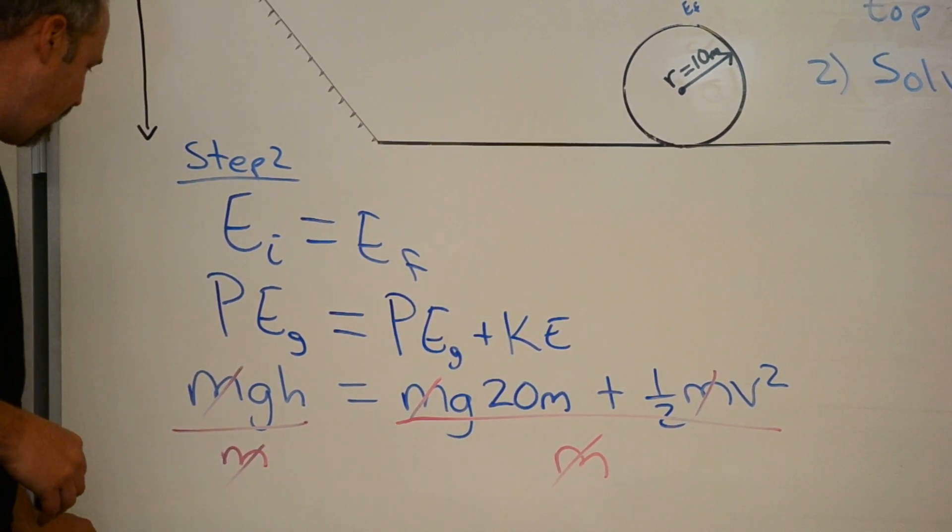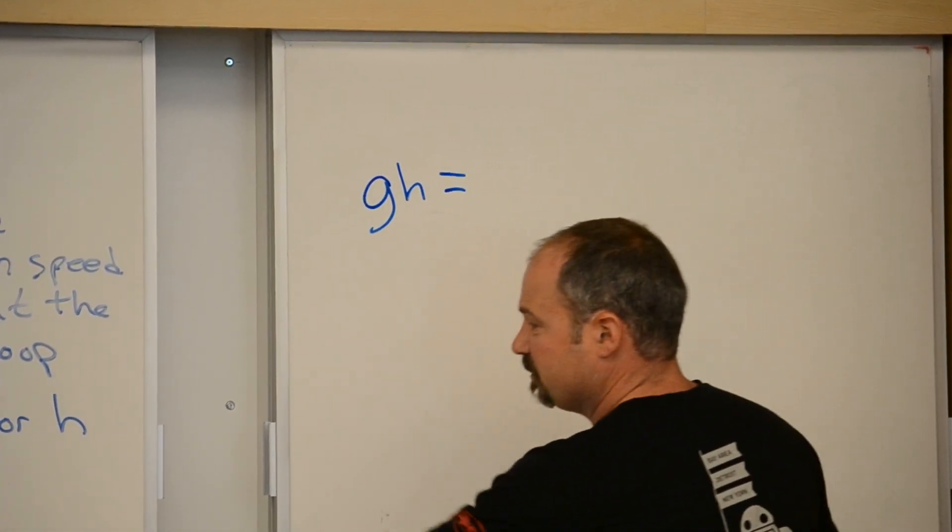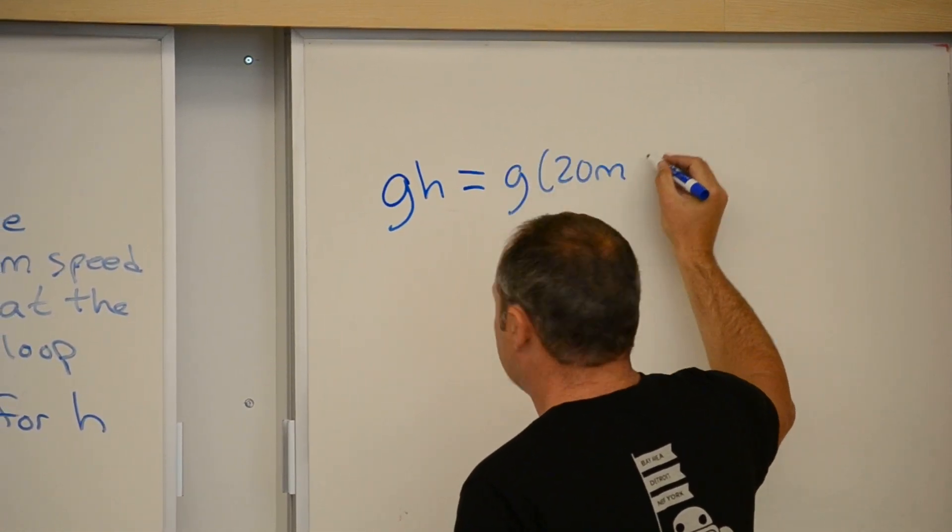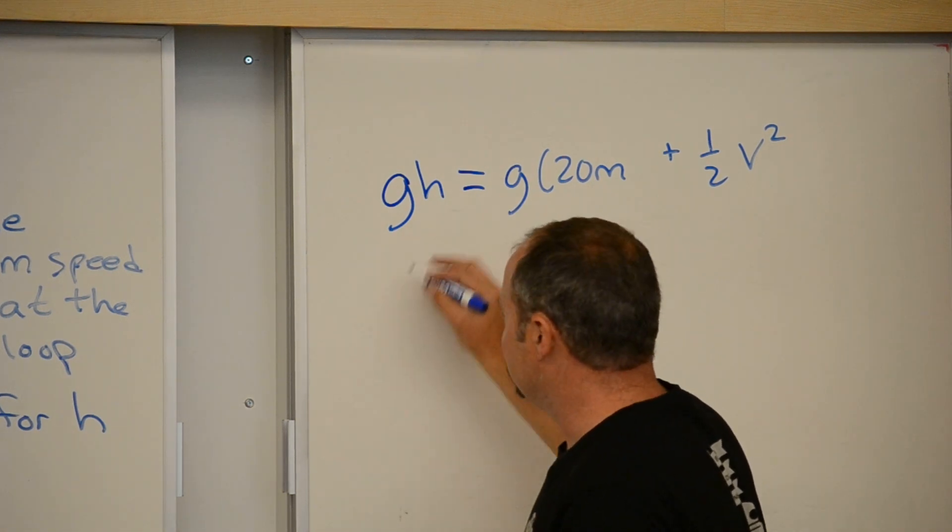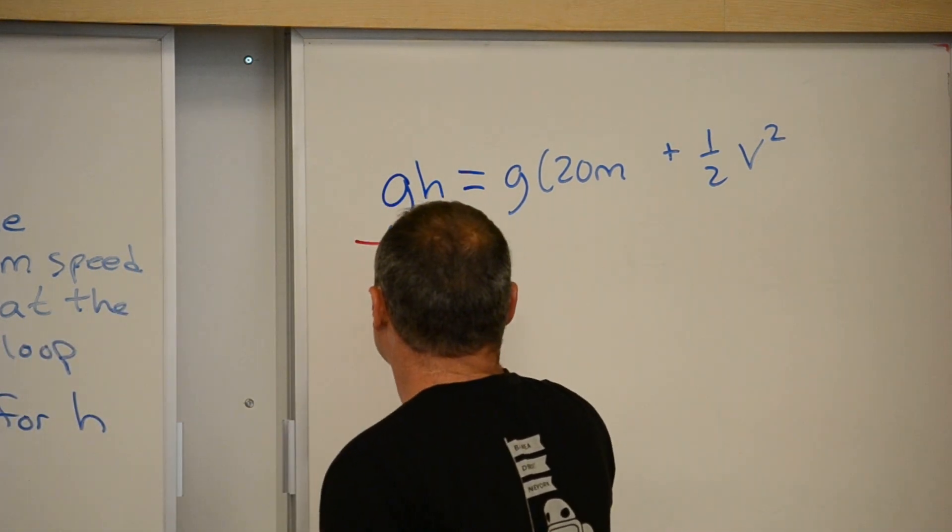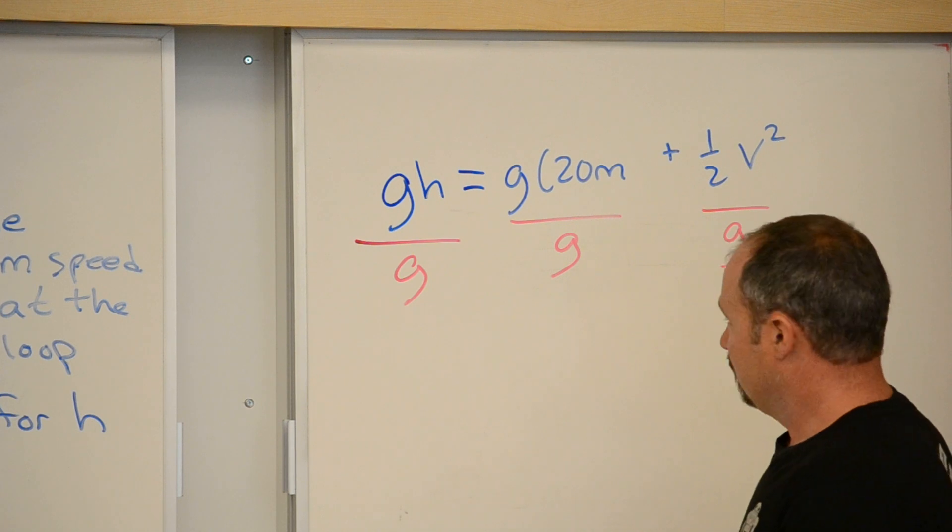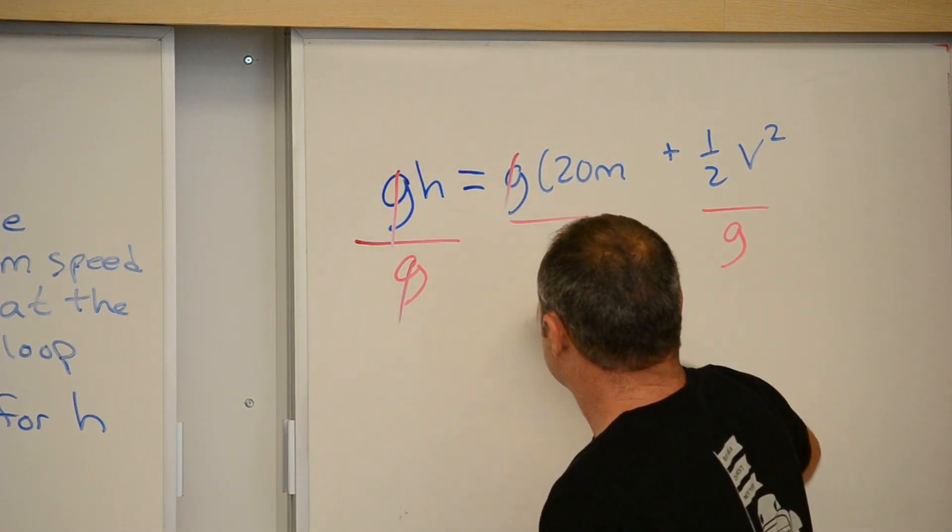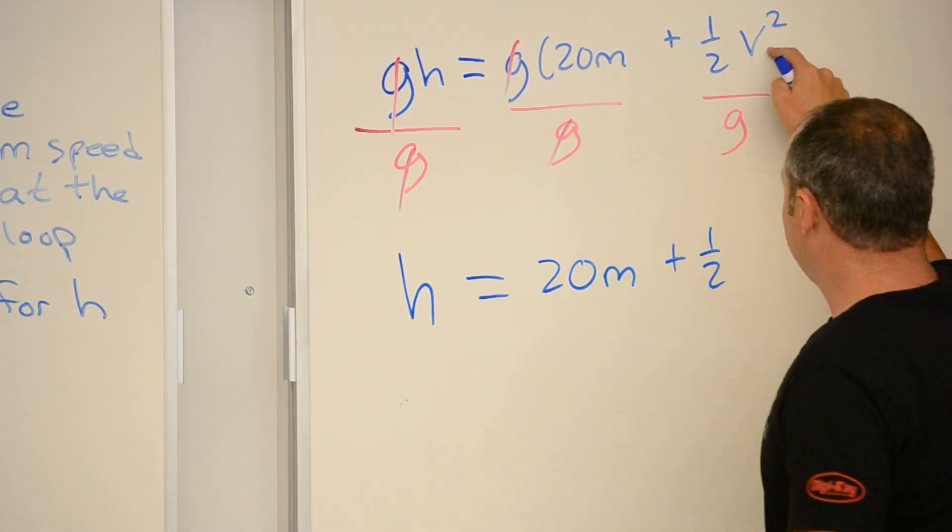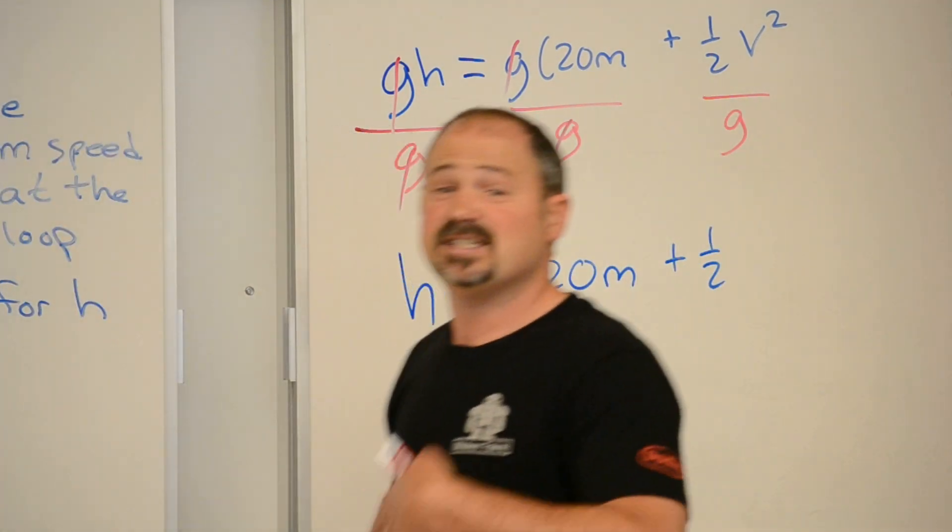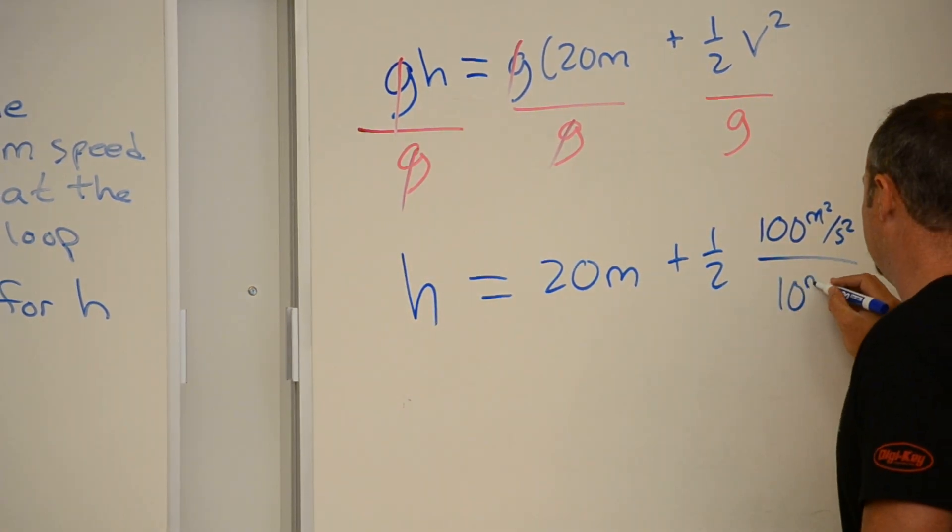Let's finish this problem so we can solve for that minimum height h. We'll do that over here by plugging in the values. We have gh equals g times 20 meters plus one-half v squared. Let's divide both sides by g. When you have an addition, both terms get divided. Cancel. And we get our new expression. H is equal to 20 meters plus one-half v squared over g. And I know that the speed is 10 meters per second. 10 squared is 100, so 100 meters squared per second squared. Acceleration due to gravity, 10 meters per second squared.